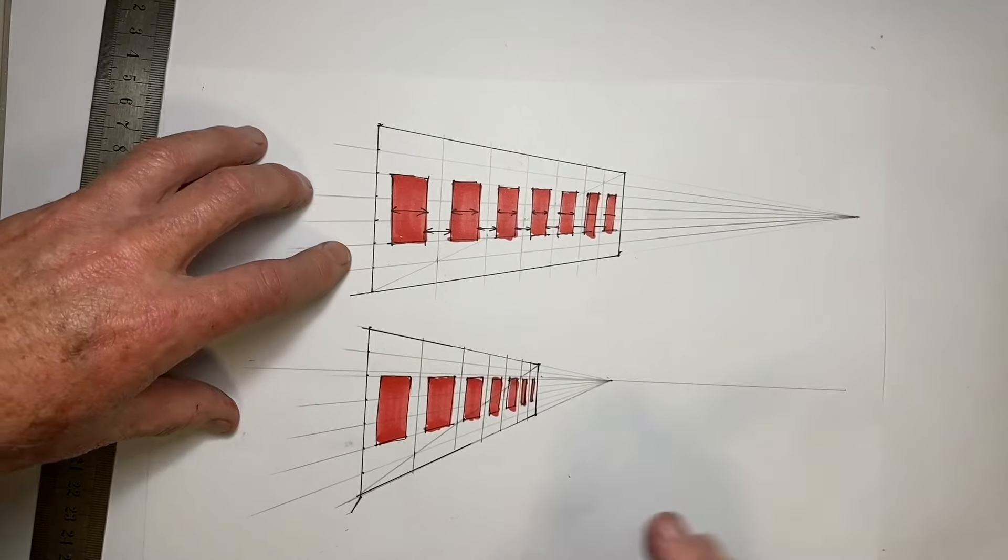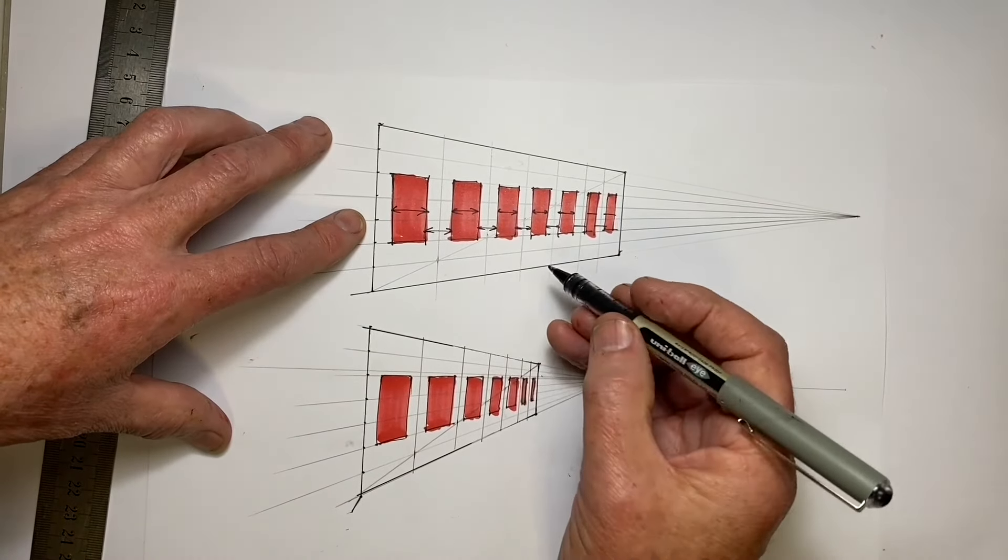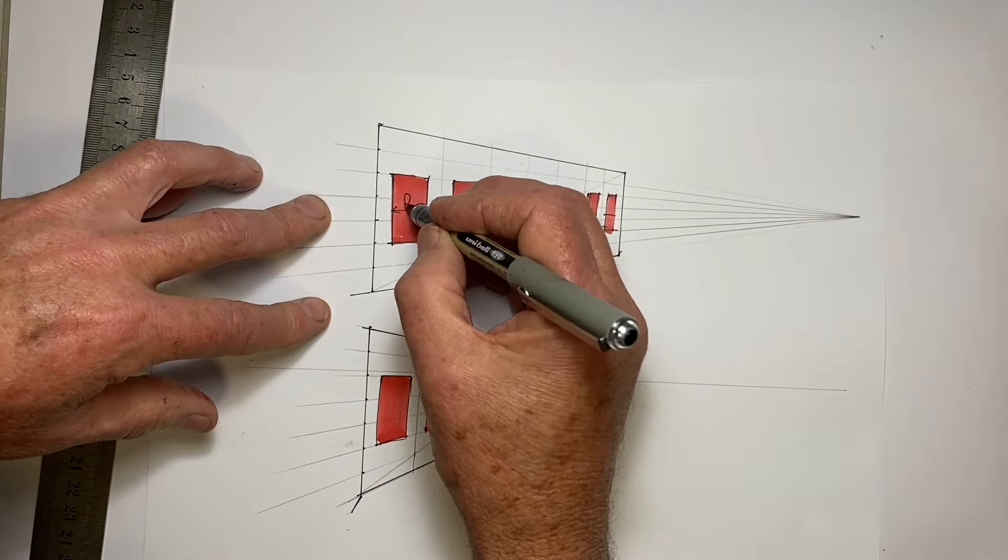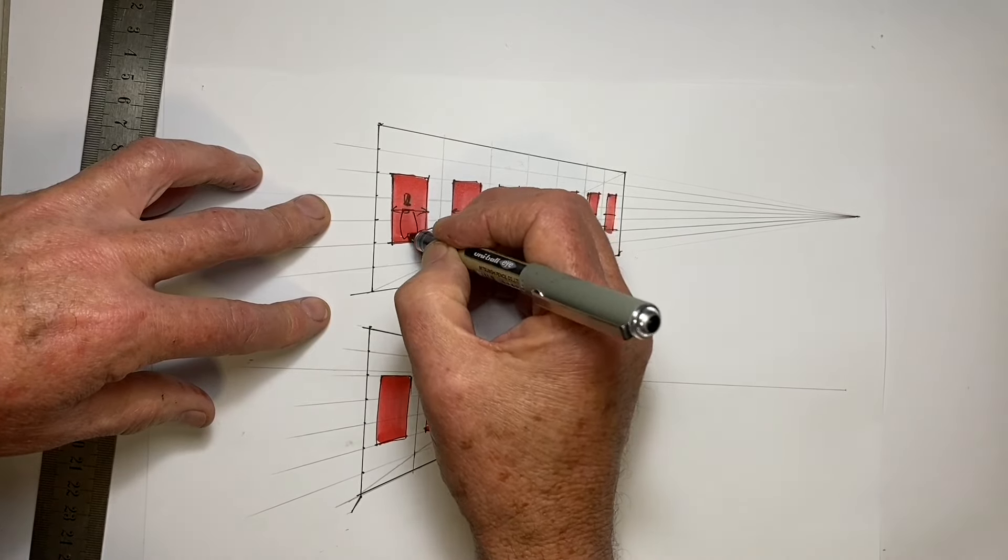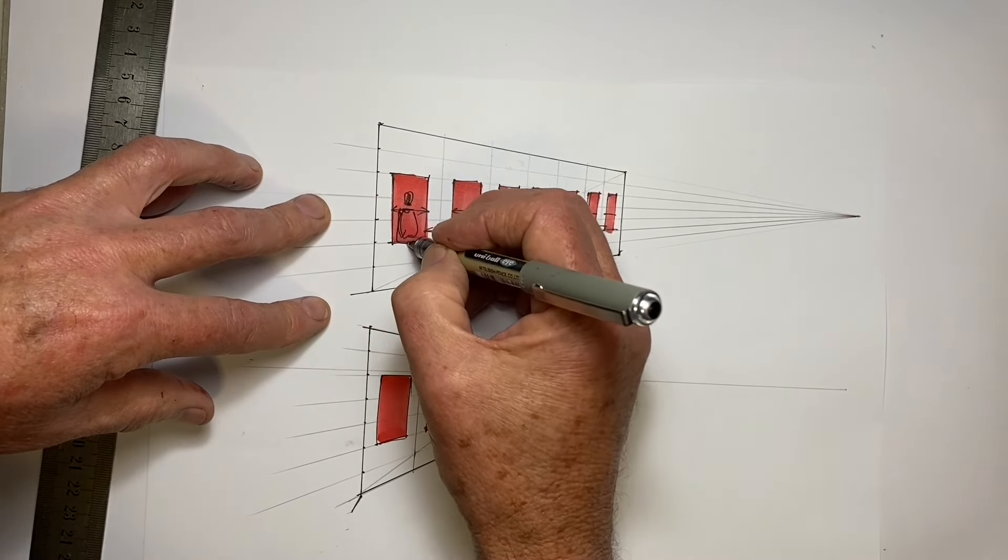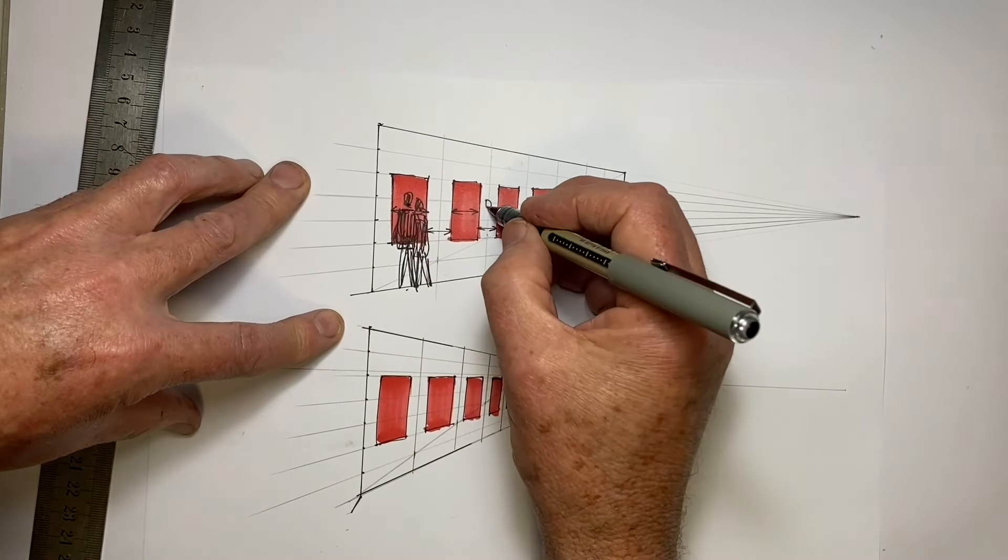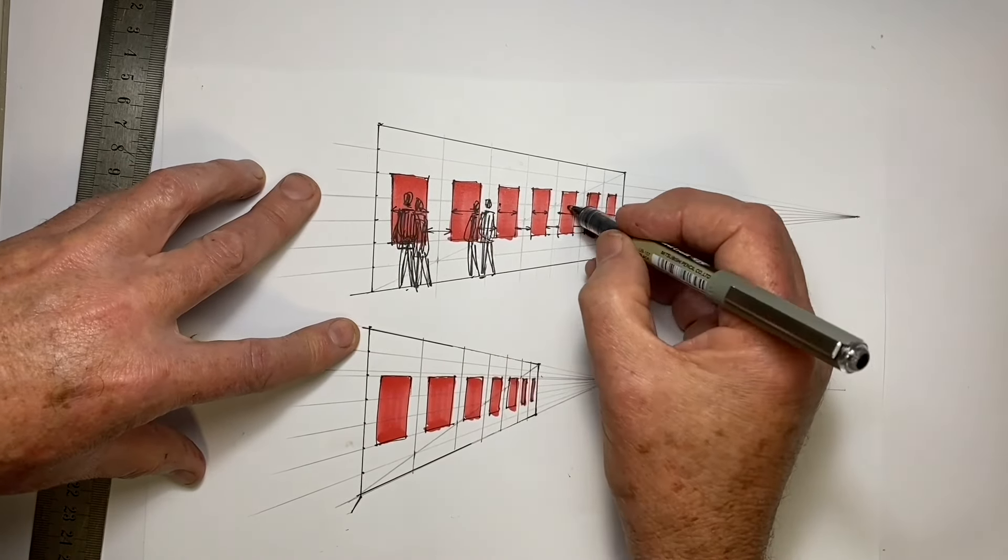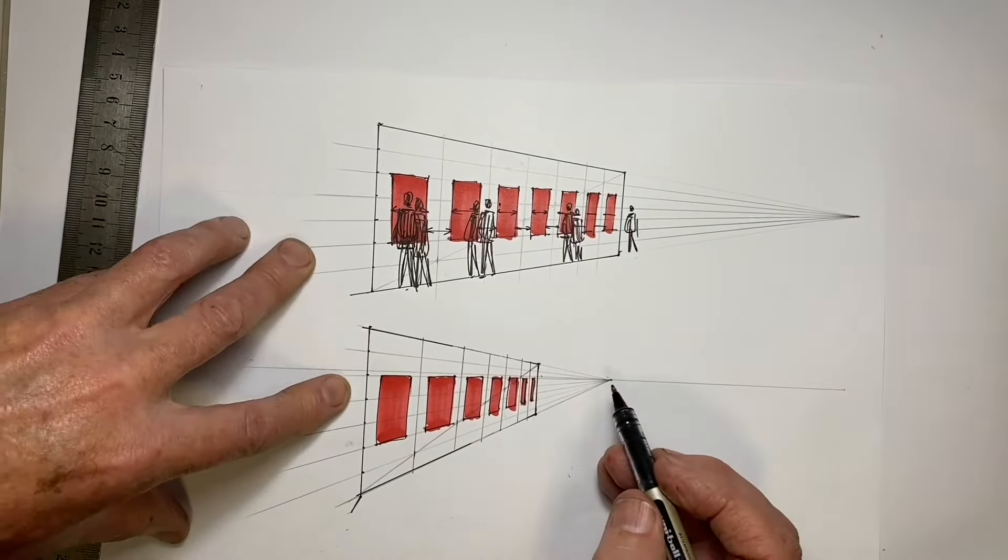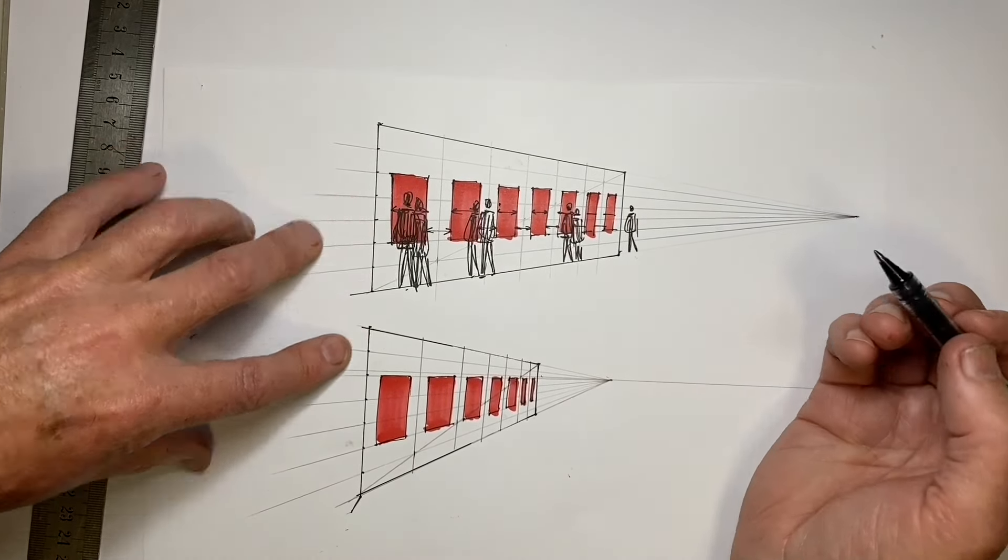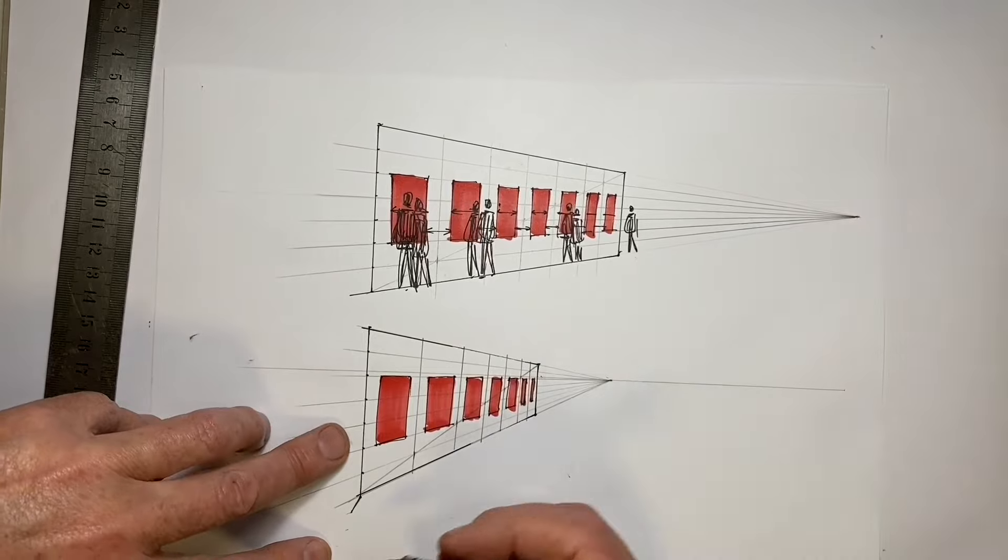Let's now add some figures to these two walls, and we'll add them with the same principle of aligning the heads and the feet on the correct perspective lines.